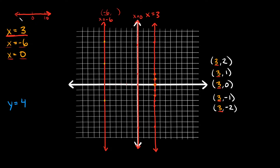Taking that same approach to your graph: this is your x-axis, with 0 here, 10 here, and negative 10 here. So where's 3? It would be right here, where we already graphed it. This line right here is where 3 is on your number line, and so this line is x is equal to 3.